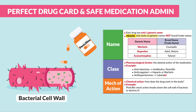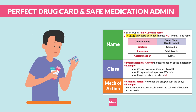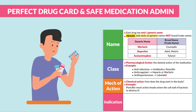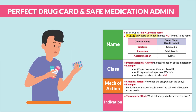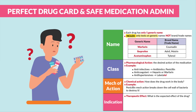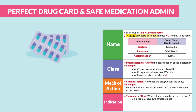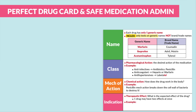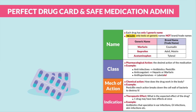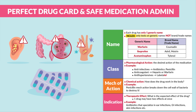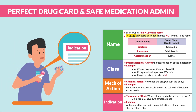For example, penicillin's mechanism of action breaks down the cell wall of bacteria to completely destroy it. Next up we have indication, also known as the therapeutic effect — basically, what is the expected effect of the drug? One drug may have two effects at once. For example, antibiotics that specialize in ear infections, or even antibiotics that specialize in GI infections or skin infections. This indication gets a little more specific than the regular mechanism of action.